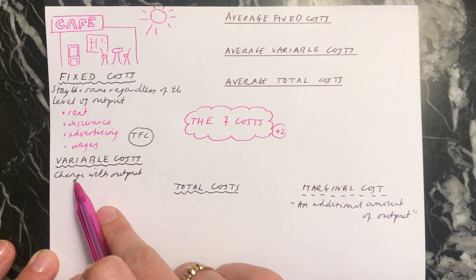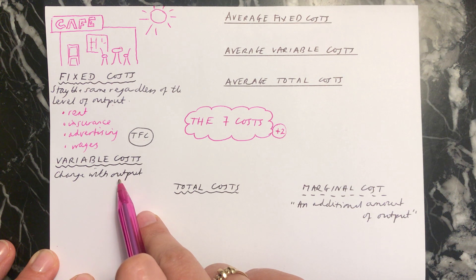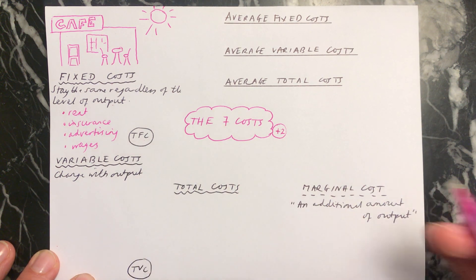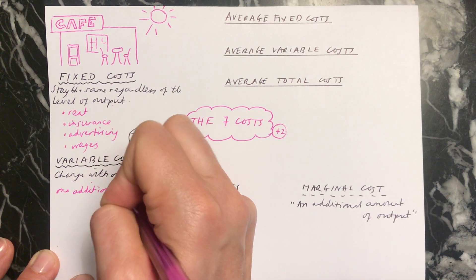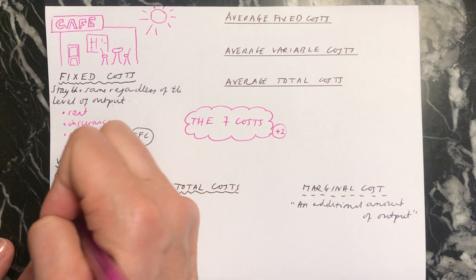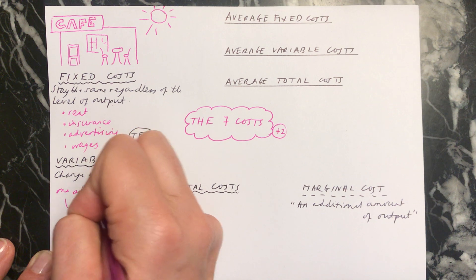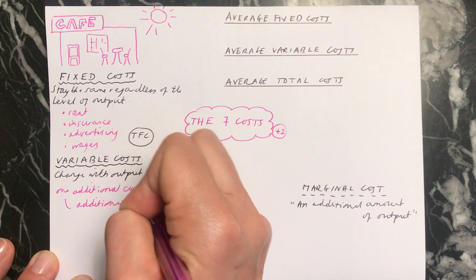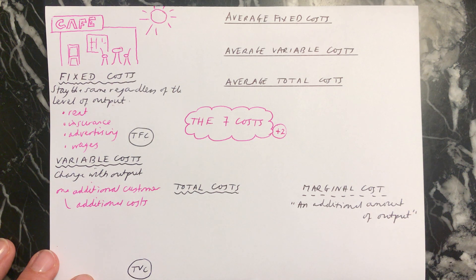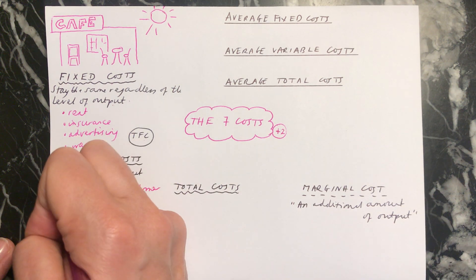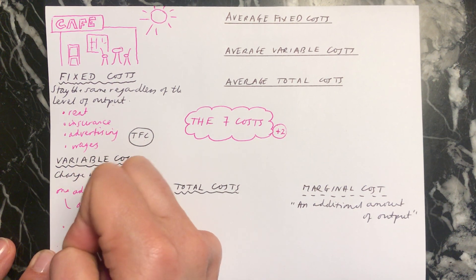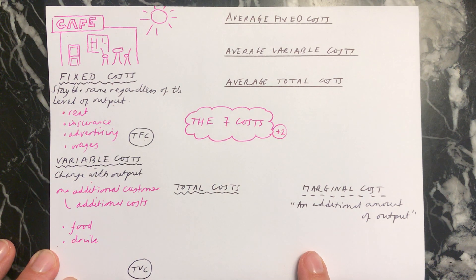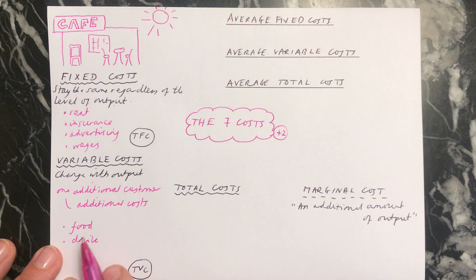Then we can move on to variable costs. These vary, or change, with output. This means that every time you have an additional customer, it will cause your business to incur additional costs — your business is having to spend more money every time you have another customer. For example, that might be paying for the food you're going to cook and the drink you're going to serve to your customer, because every time a customer comes in and buys something, you're serving them food or drink and you had to pay for that.